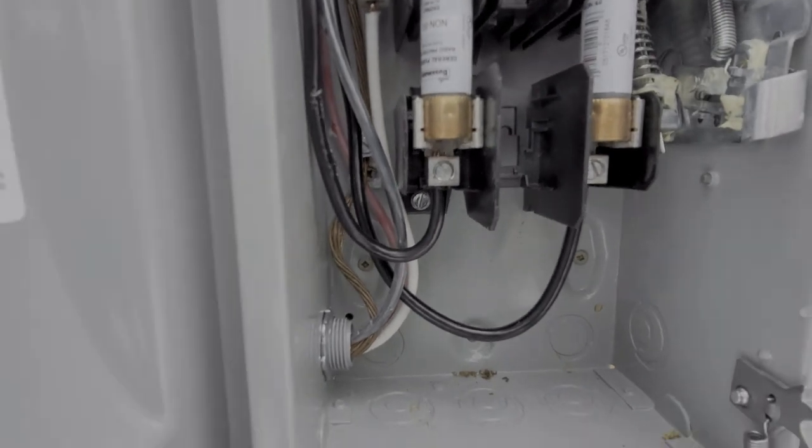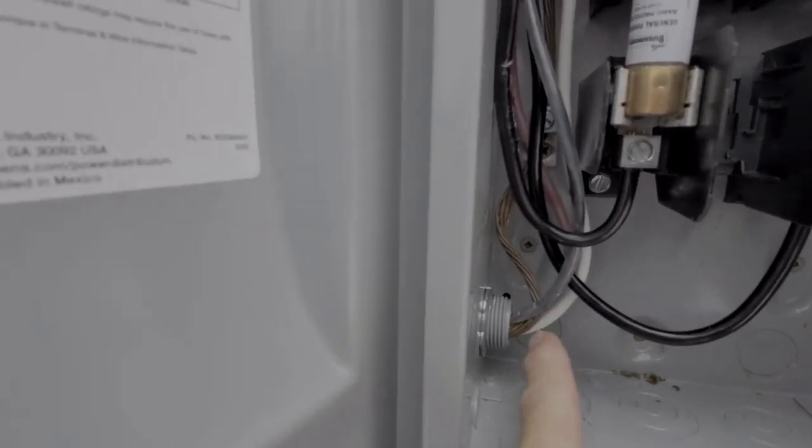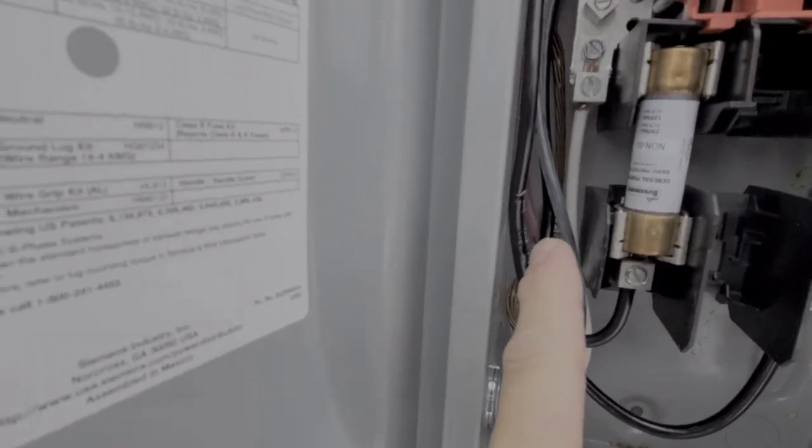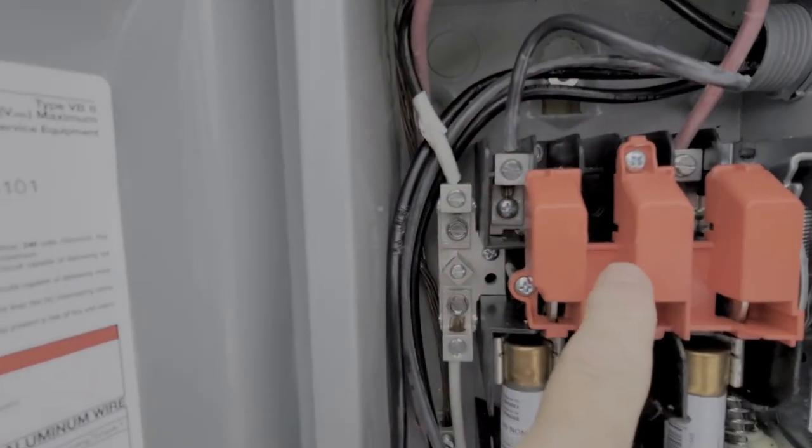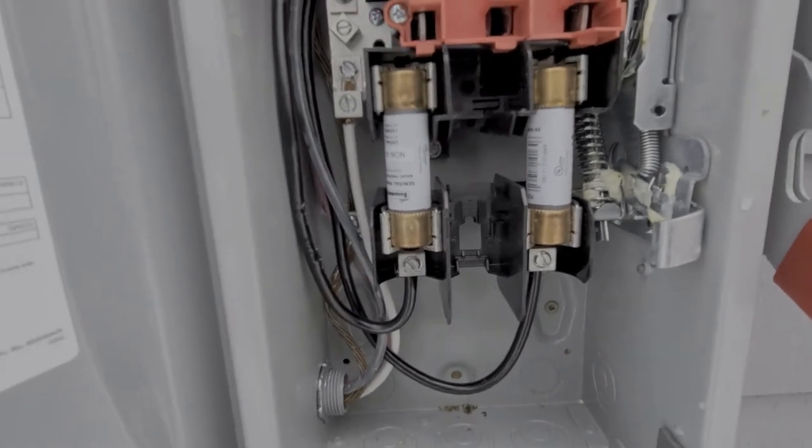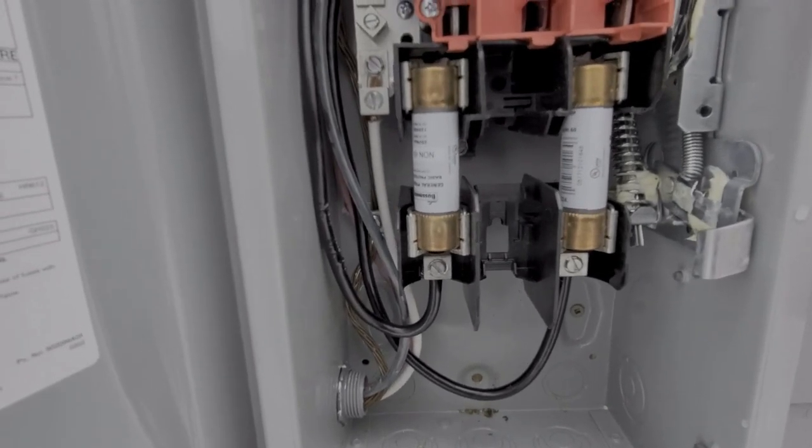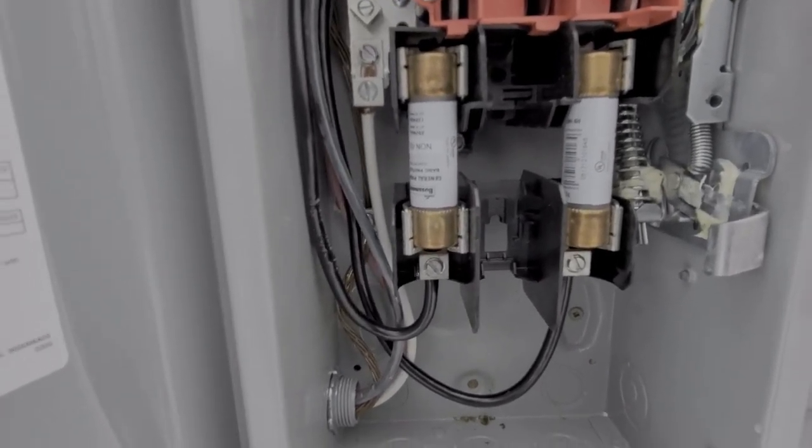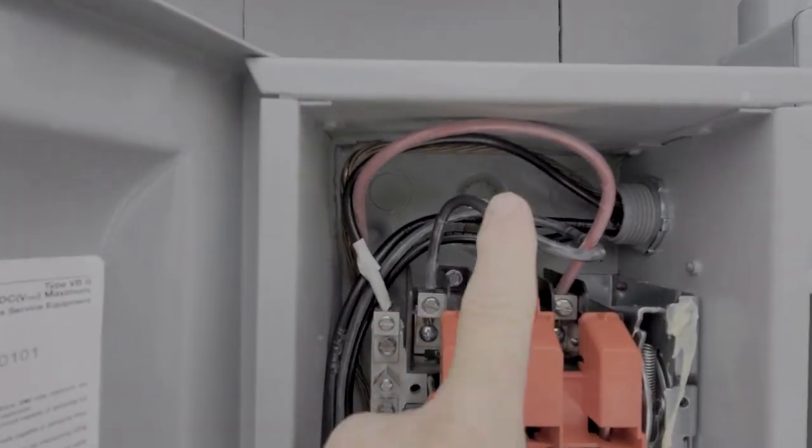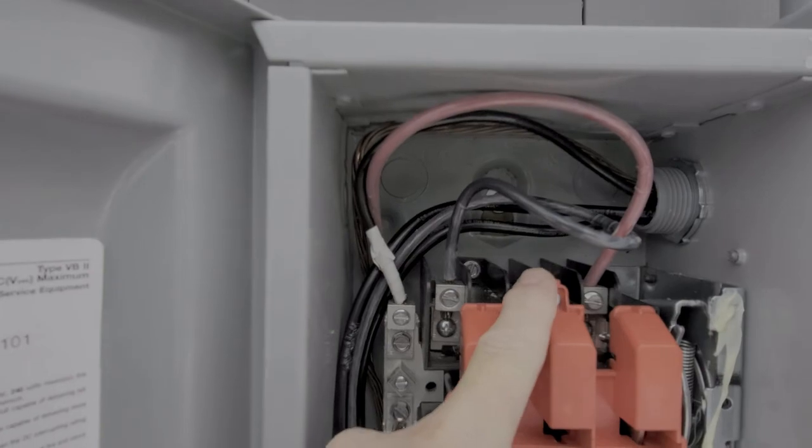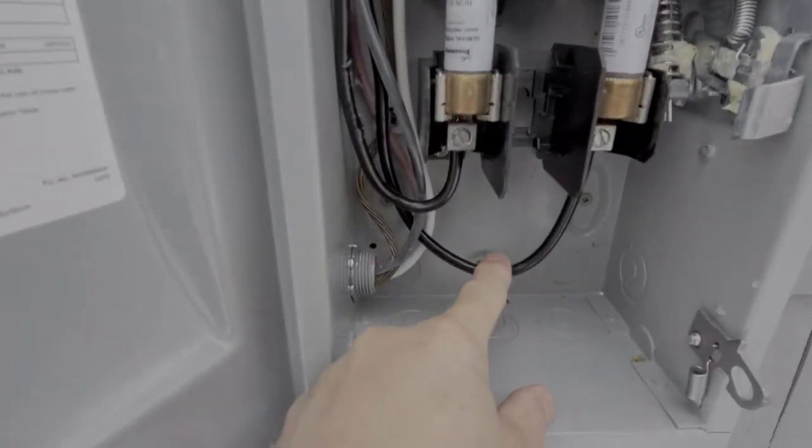The reason being if the fuse goes and you have to fix that and you turn this off, you're disconnecting the top which is the power coming from the grid which will shut down the solar. If you do it the other way and the power comes in this way and you shut it off, these fuses are still going to be running hot from the grid and that's a dangerous situation.